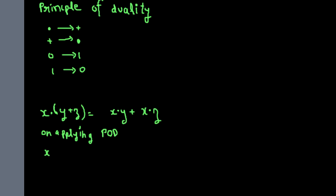Multiplication is changed to plus, and plus is changed to multiplication. So instead of multiplication you write plus, and plus becomes multiplication: x+(y·z) = (x+y)·(x+z).